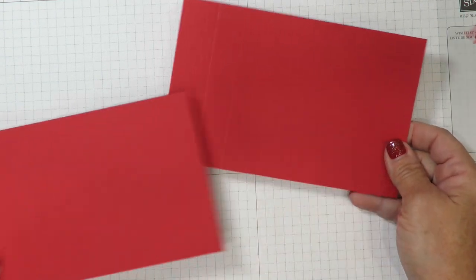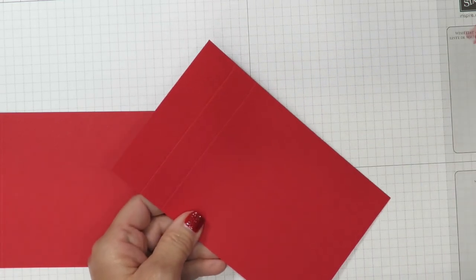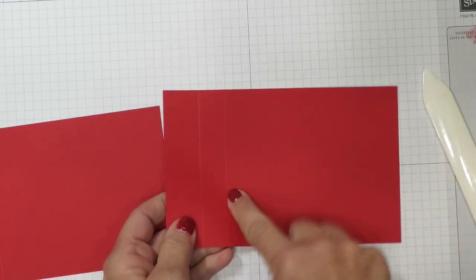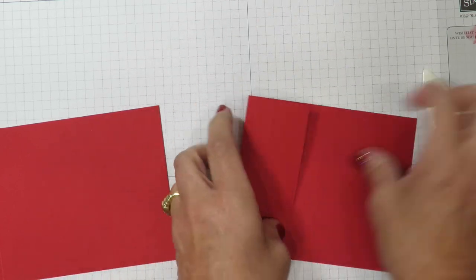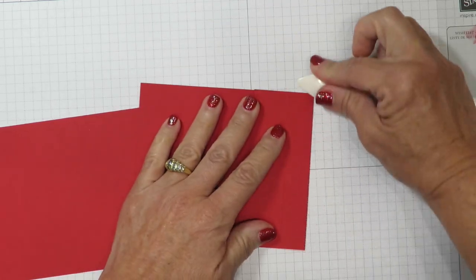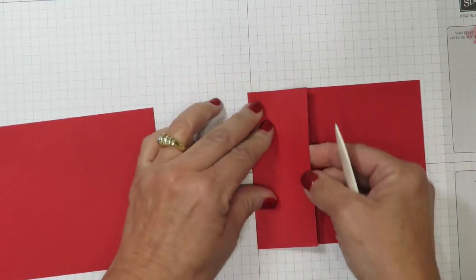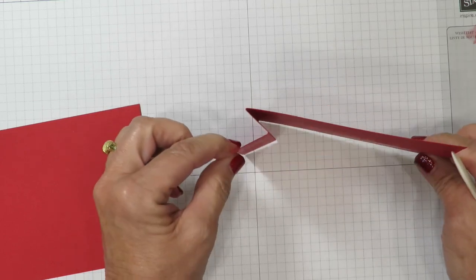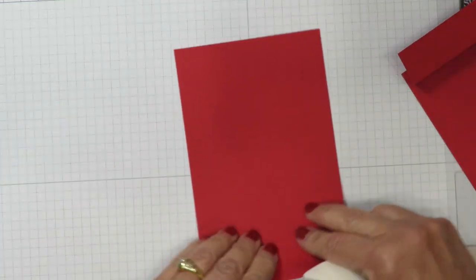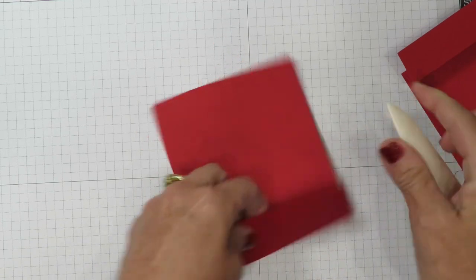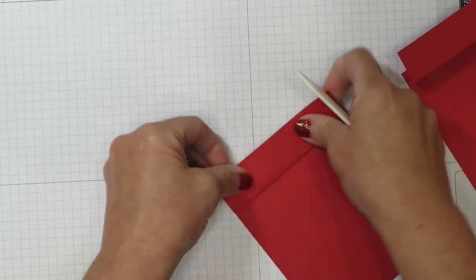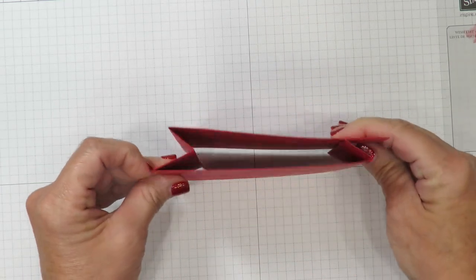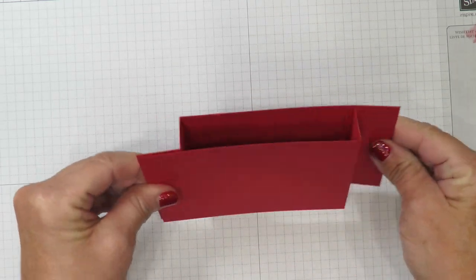Remember our two red cardstock panels. Let's go ahead and crease those up. You're going to want to use a bone folder so you get some real nice crisp creases here. So the line that's in the center you're going to fold towards the inside. I'm going to go over it with that bone folder and then the outside score line is going to come back on itself. So you're going to see it kind of makes like the letter Z and the same thing on this one.